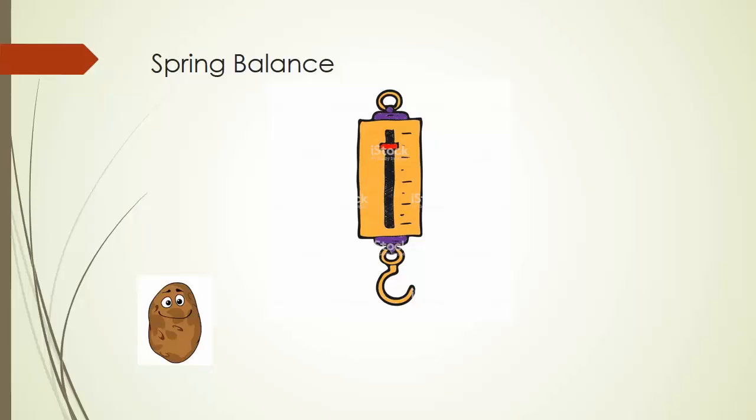Now we move on to the other side, that is how to measure weight. To measure weight we use spring balance. In spring balance we have a spring-like structure and a hook to which we hang the potatoes such that it is being attracted by earth's attraction power and it gives a reading in kilogram force or Newton.